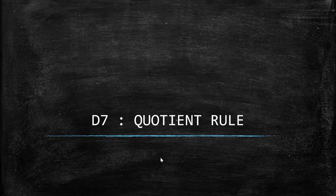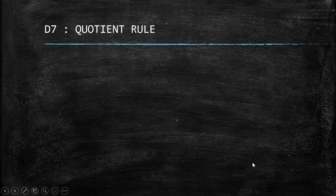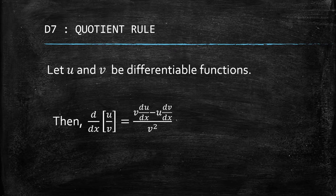Hello guys and welcome to the seventh basic differentiation rule. We have the quotient rule. It's very understandable if you have already watched the product rule, as it's the quotient counterpart of the product rule. We have u and v again for easy memorizing. The derivative of the quotient of u and v is equal to v du minus u dv.